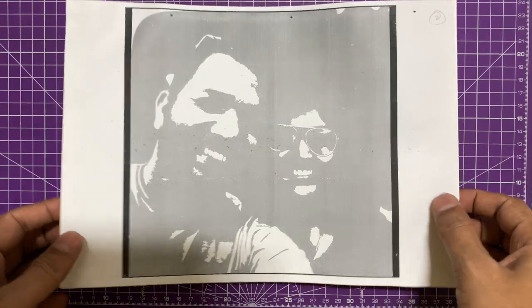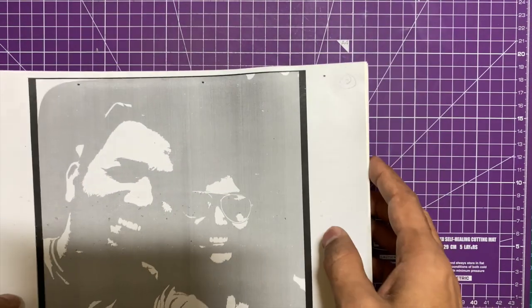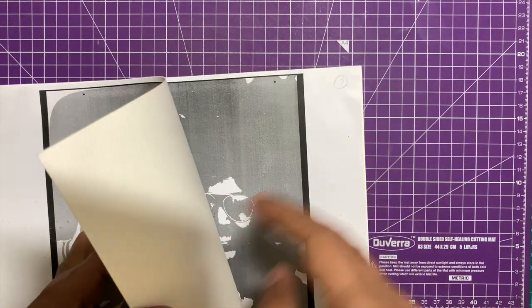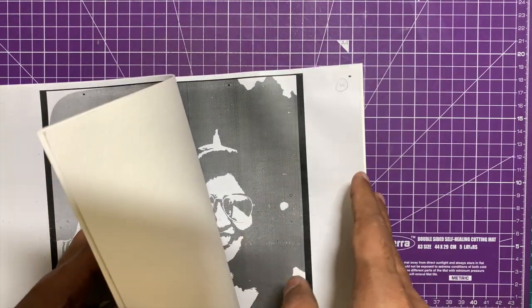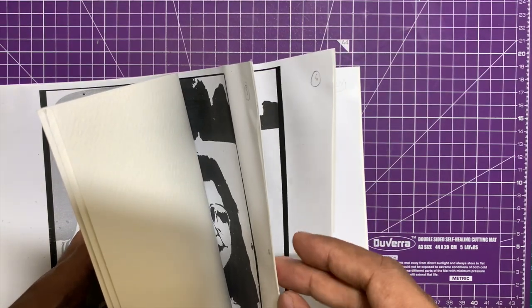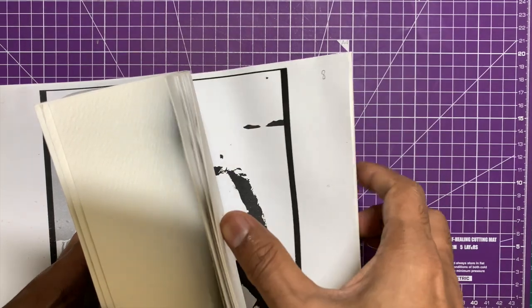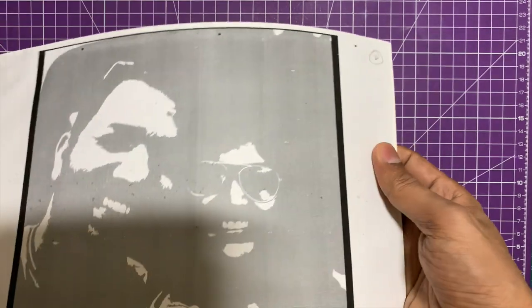The first thing that you're going to need to make this lightbox portrait is a layered template. As you can see, I already have created a layered template and separate layers for each layer of this portrait. I have prepared this template in Inkscape. I already have a video on my channel on how to prepare layered portrait in Inkscape, so you can refer to that video.